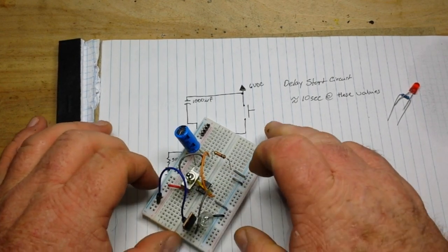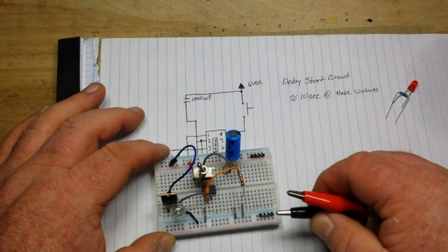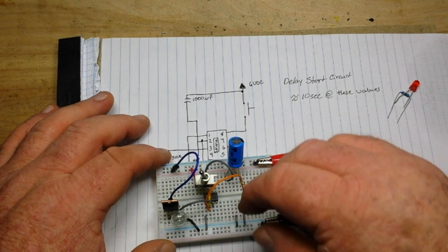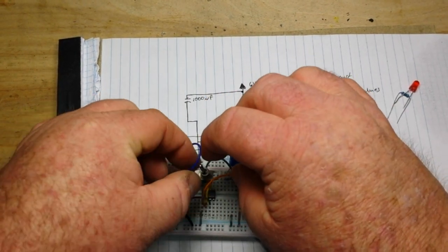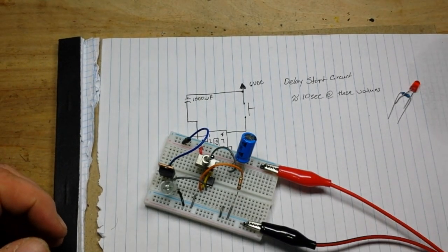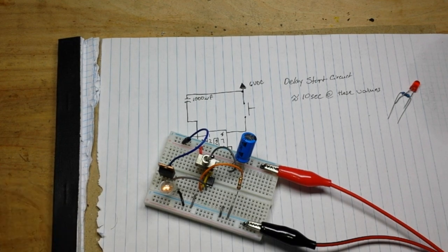Ground, VCC, and power. One, two, three, four, five, six, seven, eight, nine, ten, and she's on. Very nicely done.